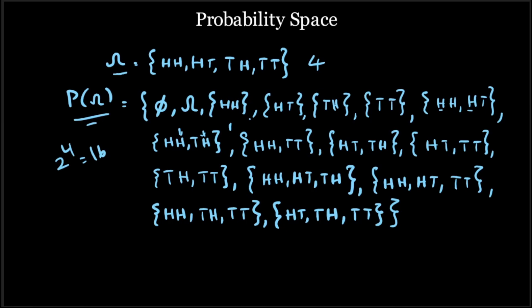Once the experiment is complete, you can clearly verify which of these events have occurred or which have not. This power set P of omega is an example of what we call a sigma algebra. In general, sigma algebra can be defined as the set of all measurable events of a particular random experiment. Sigma algebra need not always contain all possible events — if you are looking for specific information, you can define a sigma algebra corresponding to the events for that specific information.